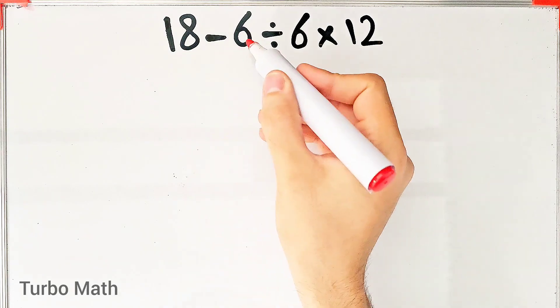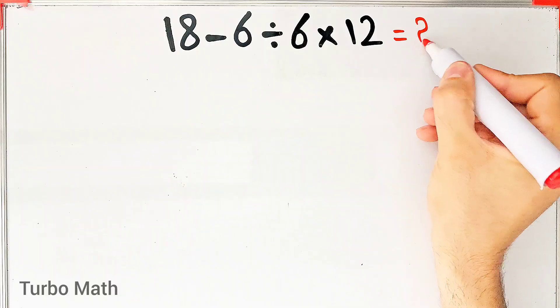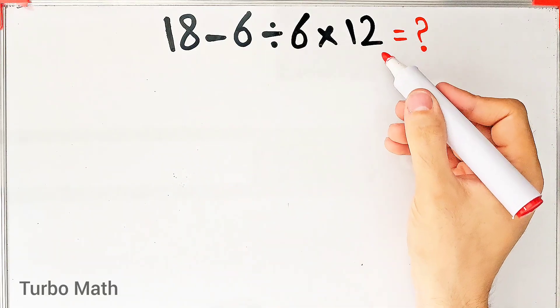18 minus 6 divided by 6 then times 12. What is the answer of this question? Can you solve it? Hi friends and welcome to TurboMath channel.